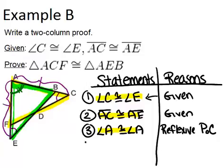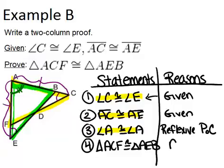So that means I have enough information in my proof to make the step and say triangle ACF itself is congruent to triangle AEB, and the reason is angle, side, angle congruence.